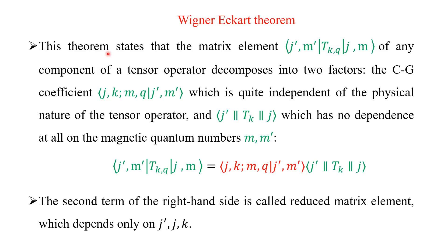Now, we will see Wigner-Eckart theorem. This theorem states that the matrix element ⟨j' m'|T_{k,q}|j m⟩ of any component of a tensor operator decomposes into two factors. One is the Clebsch-Gordan Coefficient ⟨j, k; m, q|j' m'⟩, which is quite independent of the physical nature of a tensor.